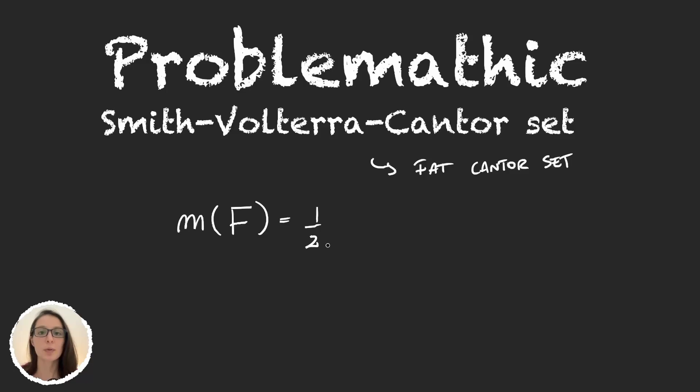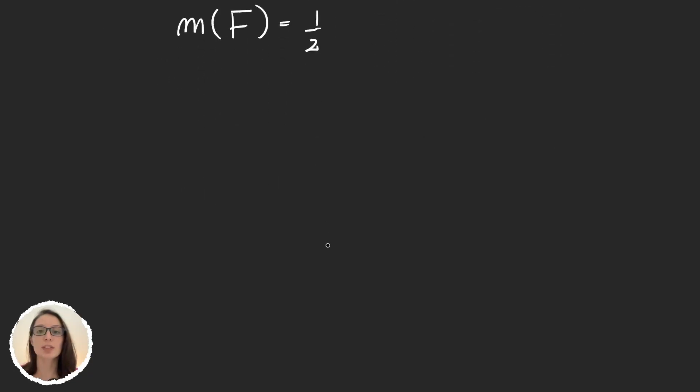The idea would be to start very similarly to how we started with the Cantor set, but instead of removing the same ratio every time (which in the Cantor set was 1/3), now we will be changing that ratio. So we will start as before with [0,1], and this will obviously be our F₀.